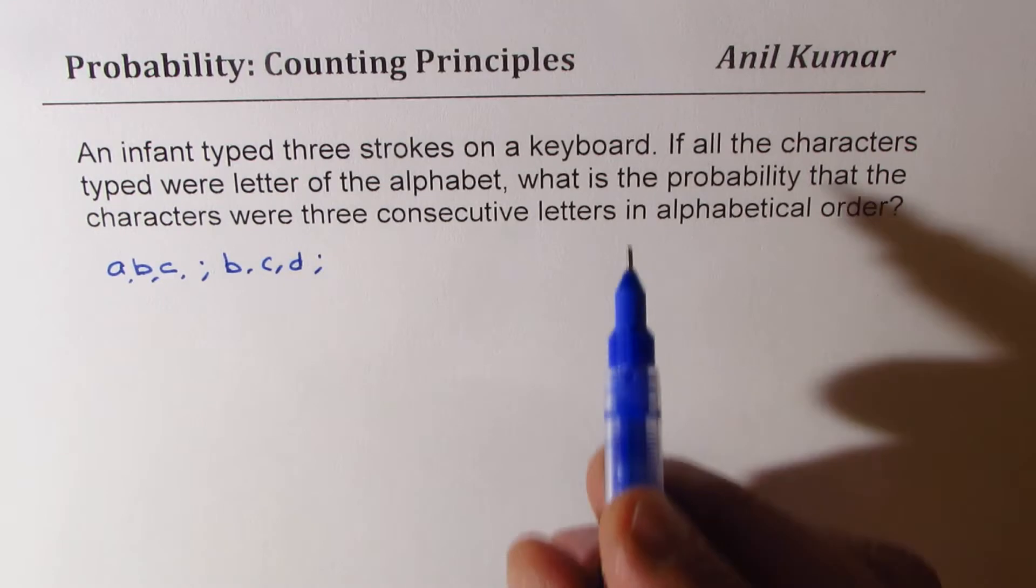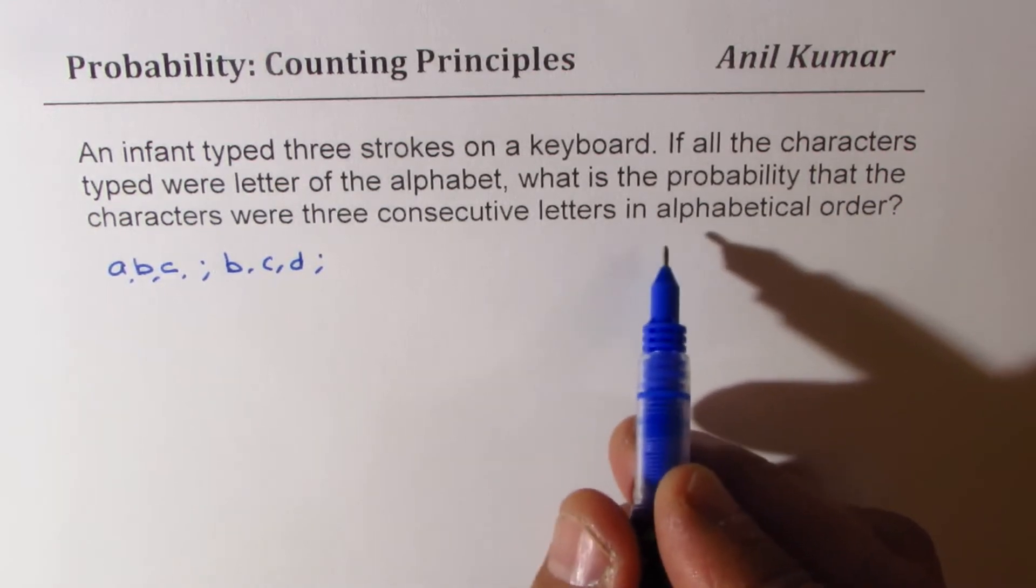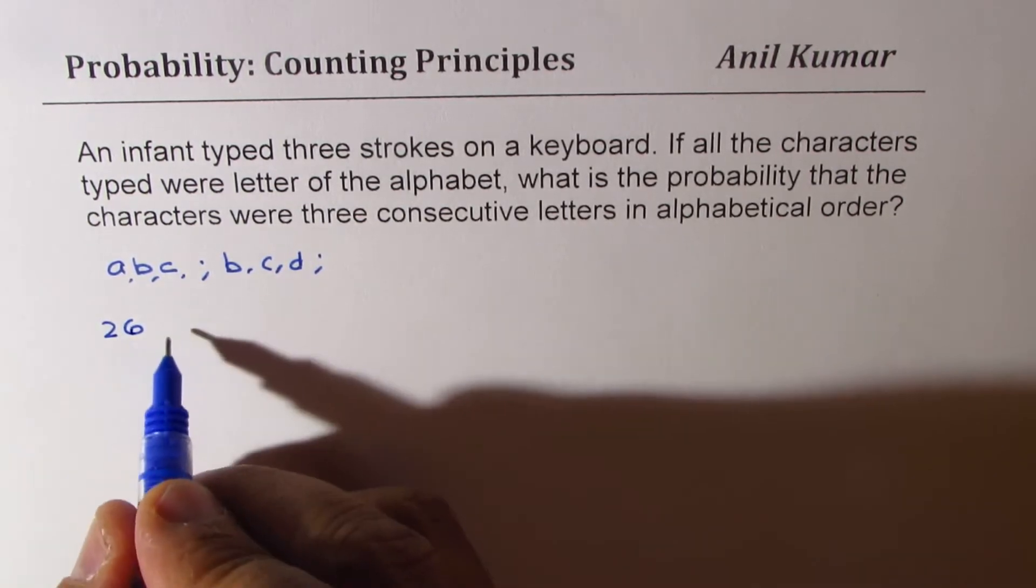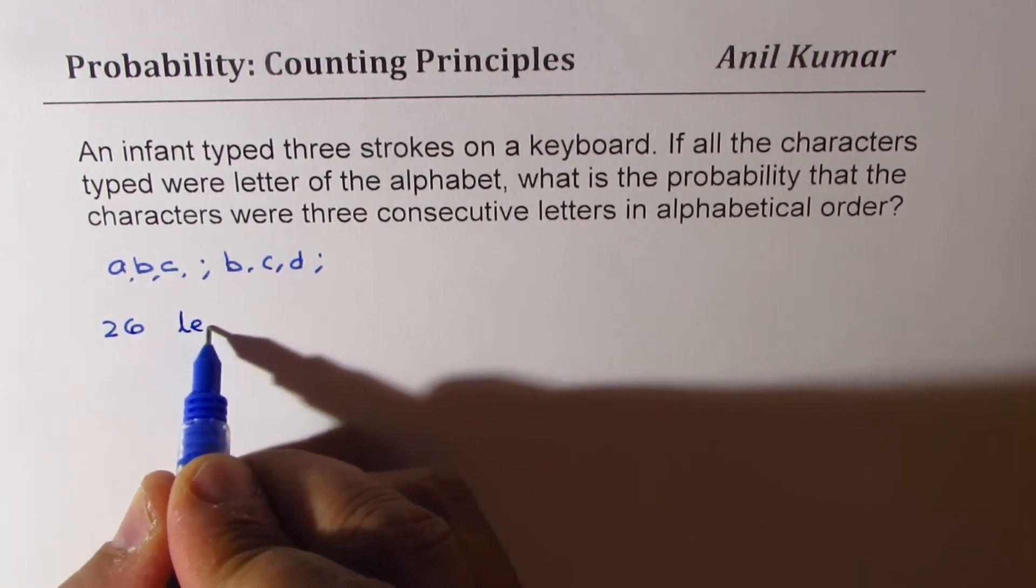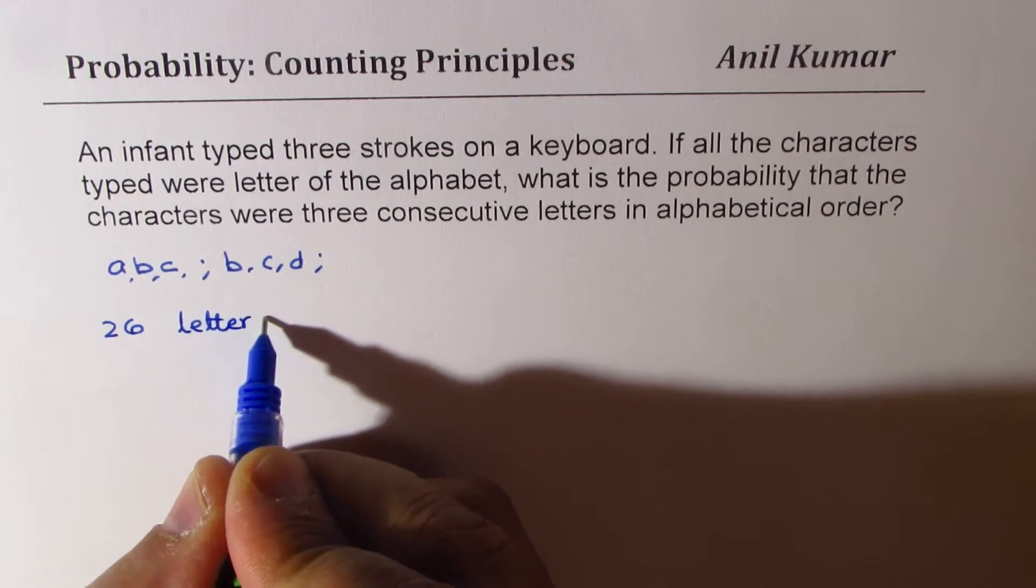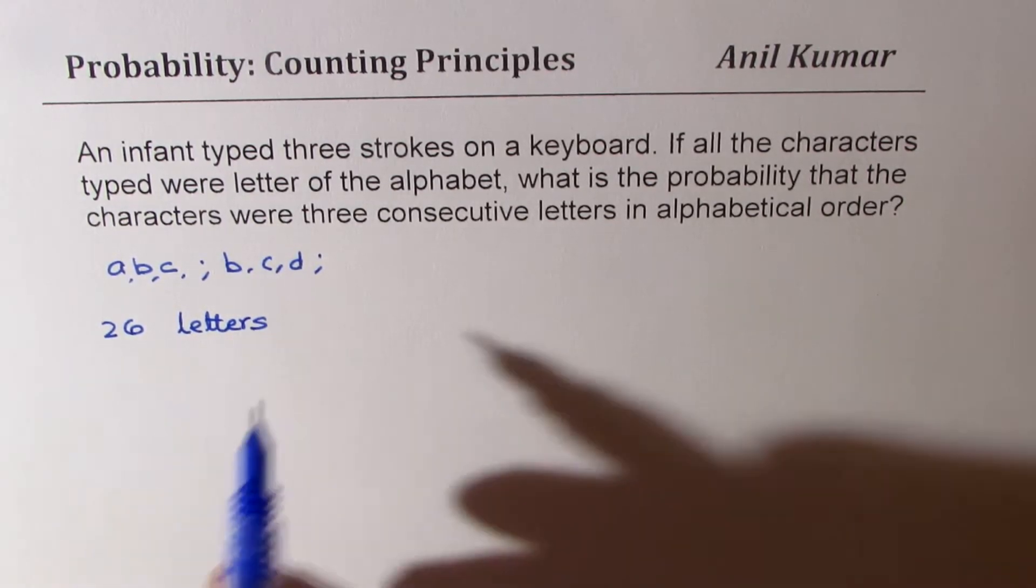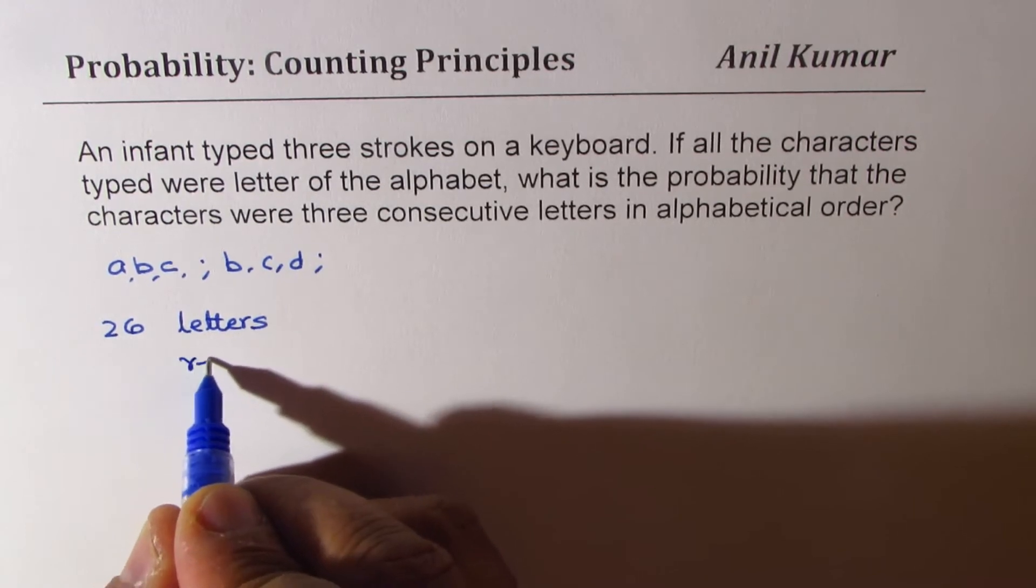Now let's talk about the total possibilities. Since there are 26 letters, the way they can be arranged is they can be repeated also, so repetition is allowed.